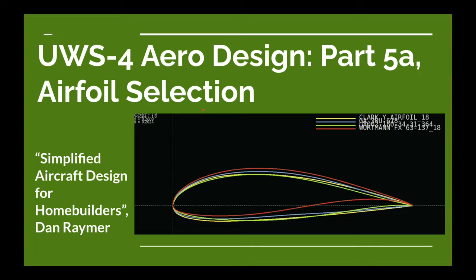The first version of this video ended up being 40 minutes long, so I've cut it into two parts. This part is 5A — we're going to talk about some of the criteria we'll use in selecting our airfoils and then introduce the airfoils we're going to select from. We'll look at the airfoil shapes and anticipate some characteristics just based on the shape. In part 5B we'll do actual analysis using the XFLR5 program, select an airfoil, and calculate things like incidence angle for the wing.